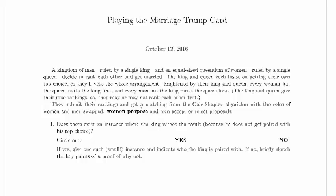They submit their rankings and get a matching from the Gale-Shapley algorithm with the roles of women and men swapped. Women propose and men accept or reject proposals. So it'll be Gale-Shapley, but we'll say while there is an unmatched woman remaining, she proposes to the top man remaining on her list.